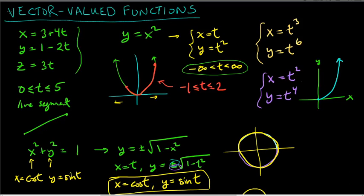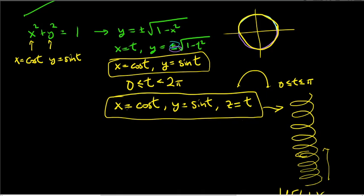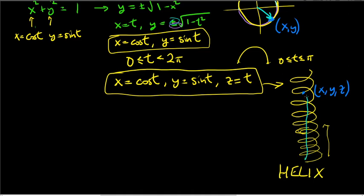So what does this have to do with vectors? We can treat x, y, and z as coordinates of a point on the circle or helix. Each coordinate pair (or triple in space) can also be thought of as the endpoint of a vector from the origin. As components of a vector, they will depend on t.